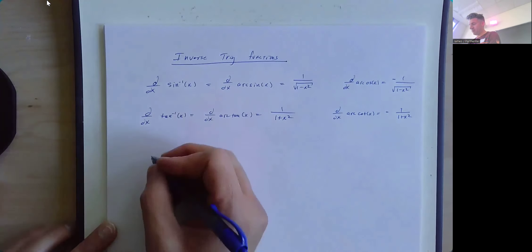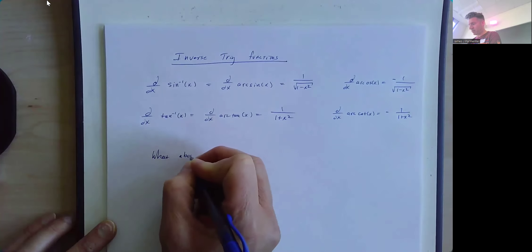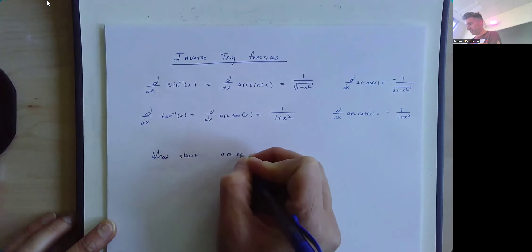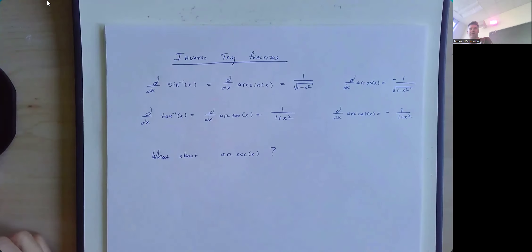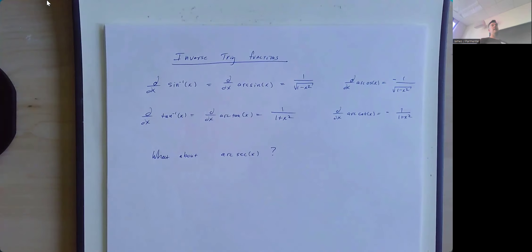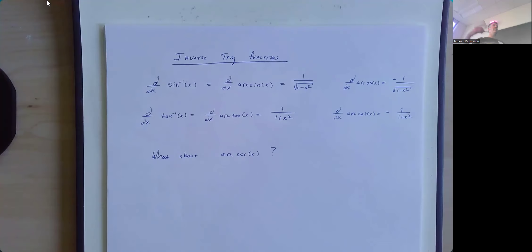Now the question is what about the arc secant function? This is where things get a little weird. Just like with sine and cosine or tangent and cotangent, the idea is you take a limited domain of your trig function where it passes the horizontal line test, and then invert it to get the inverse function.